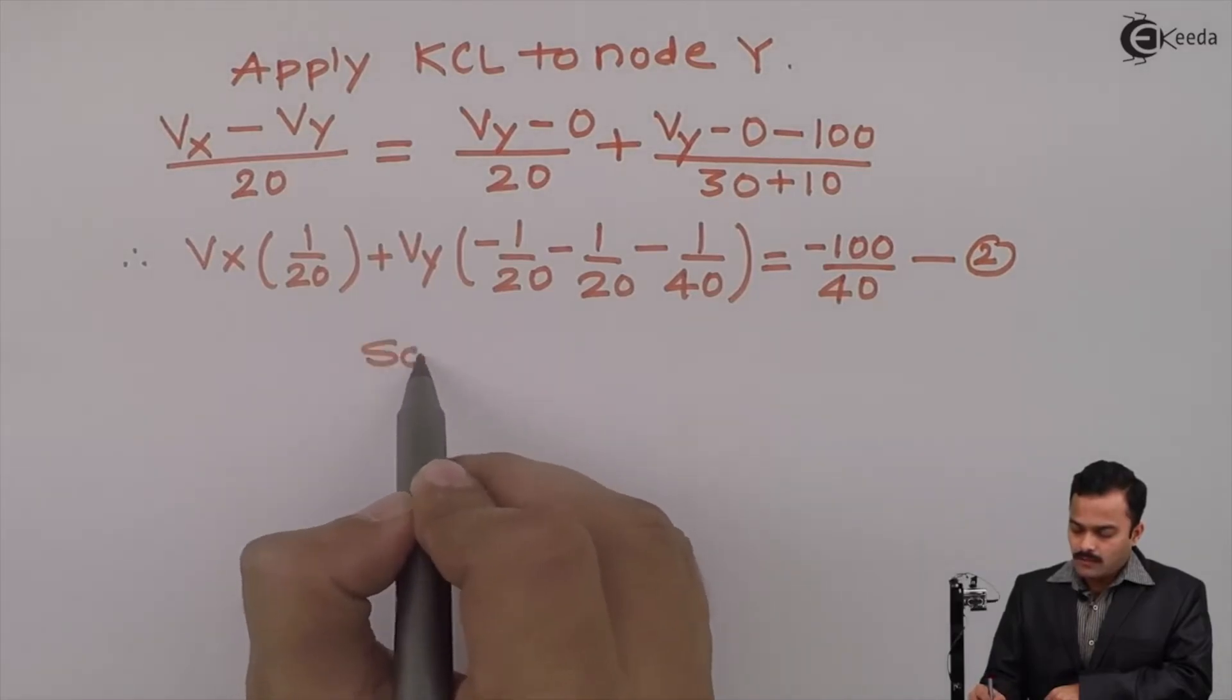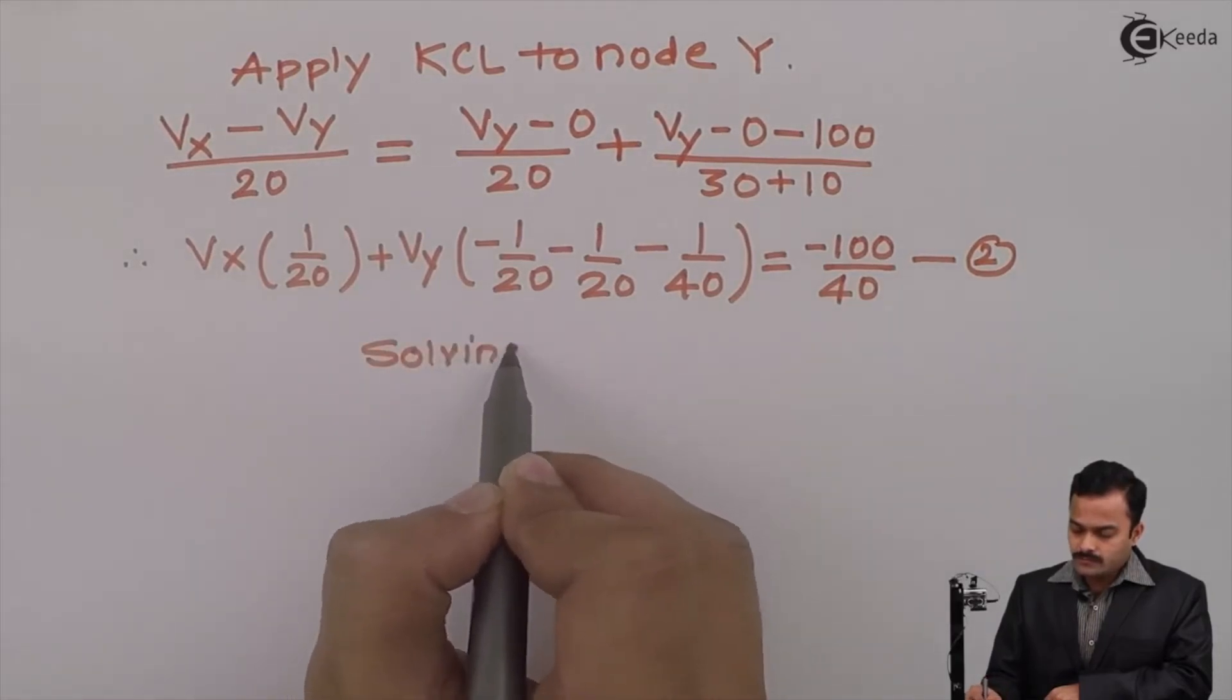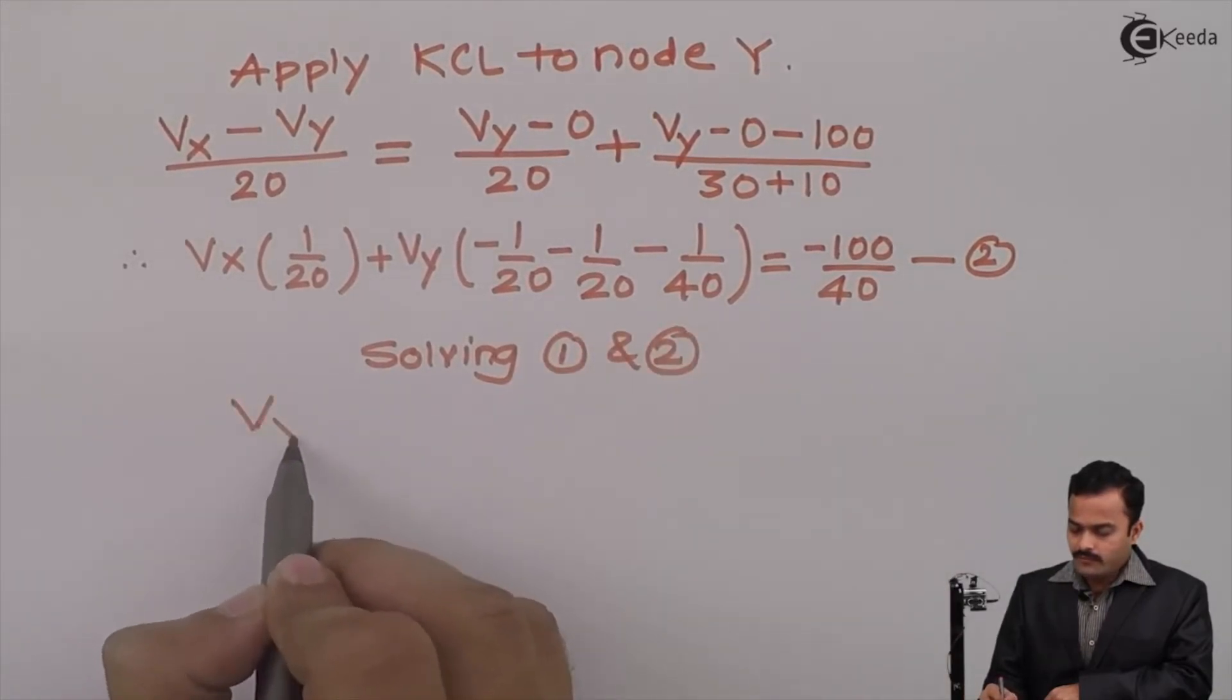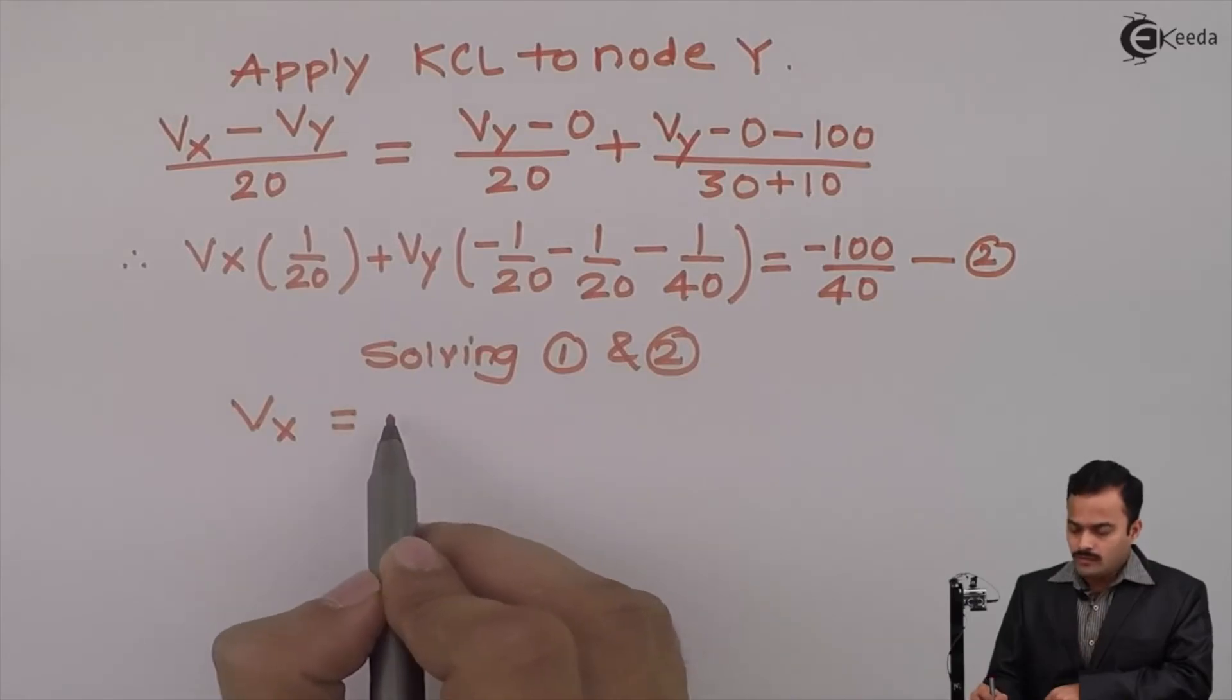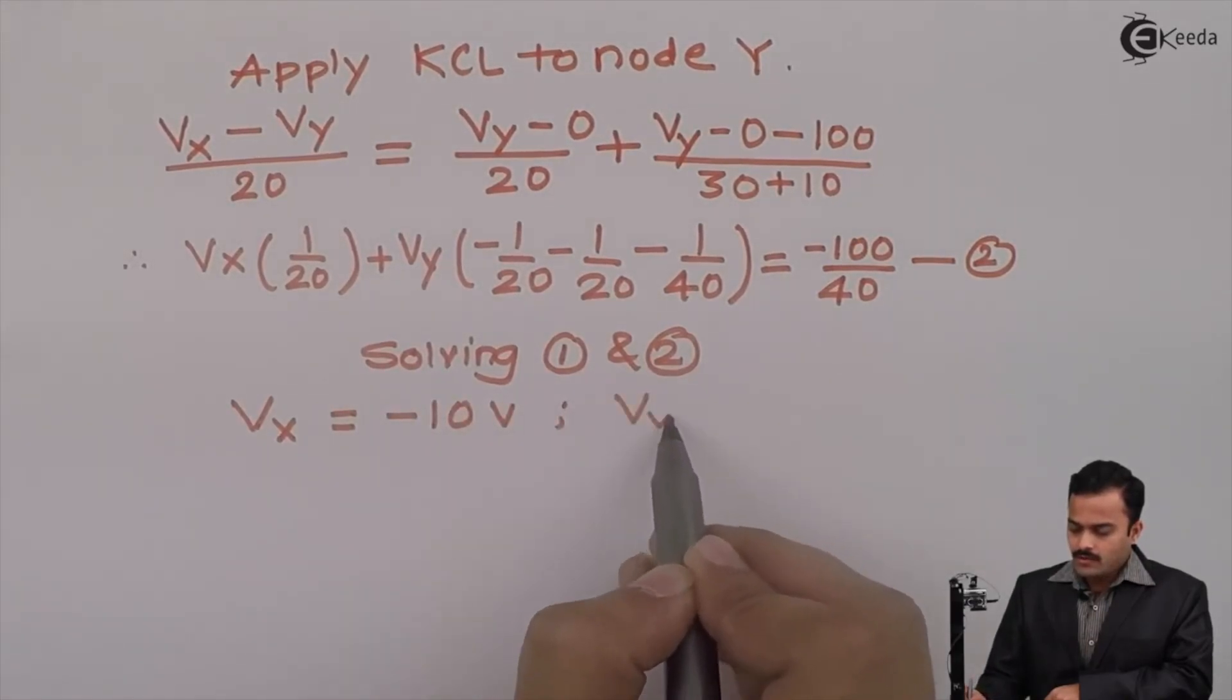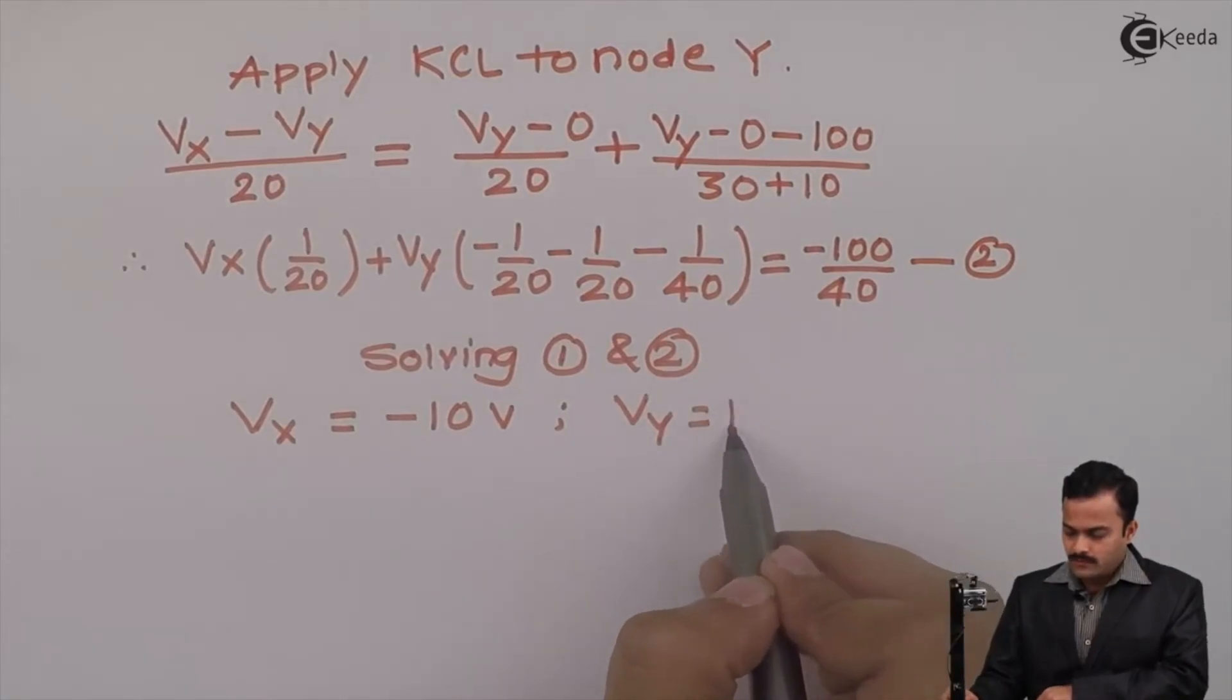Let's solve equations 1 and 2. I will get Vx equal to minus 10 volt and Vy equal to 16 volt.